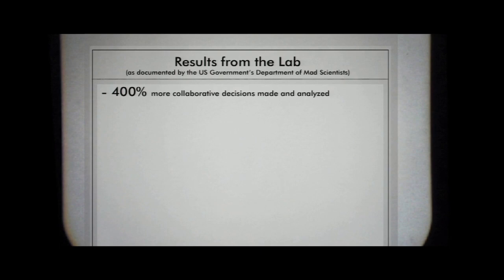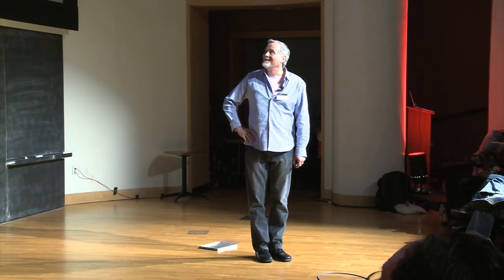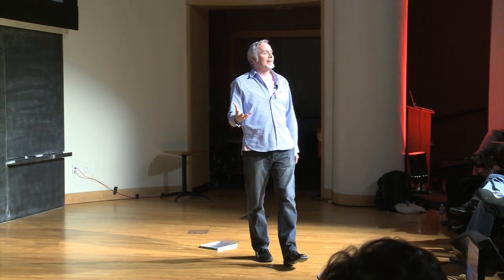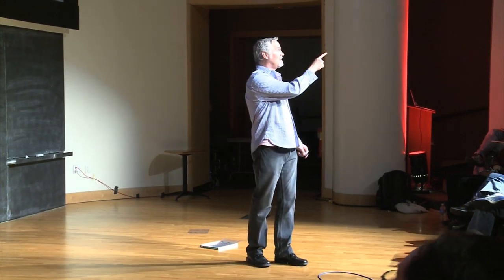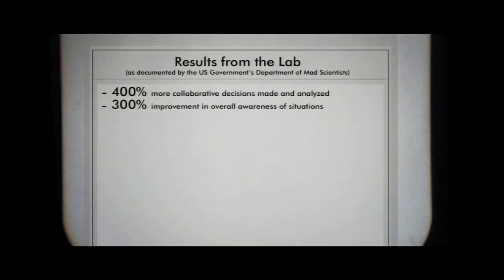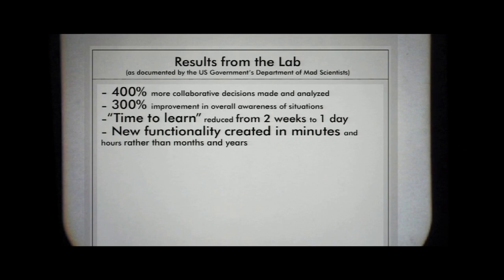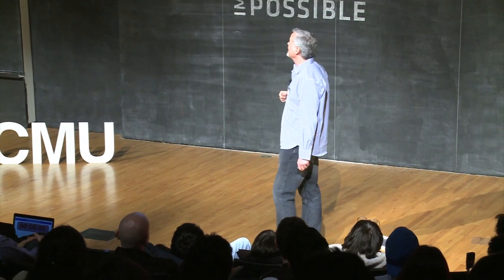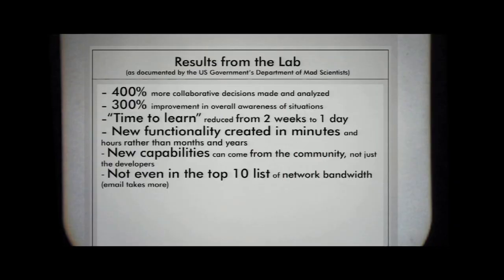We built the system and started using it with DARPA — the department of mad scientists for the government, invented right after Sputnik circled overhead when the president said that was a surprise and created an agency so we wouldn't be surprised again. They've been funding some of our research. We found a 400% increase in collaborative decision making, a 300% increase in overall situational awareness. Time to learn went from two weeks to one day. New functionality created in minutes rather than hours, some of it coming from the crowd because it was so easy to recombine. It was like the Cambrian explosion of innovation — and it didn't even show up in the top 10 of network bandwidth.